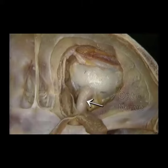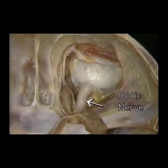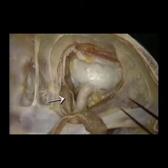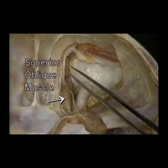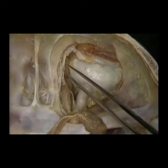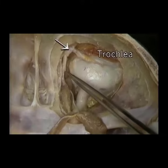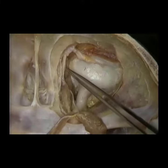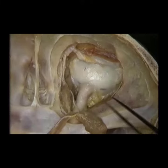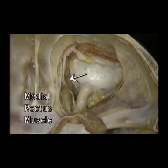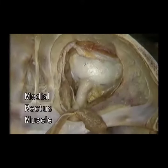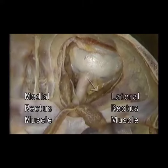Here's the optic nerve, as we've seen already. Here's the superior oblique muscle going round its pulley or trochlea. Here are the medial rectus and lateral rectus muscles.